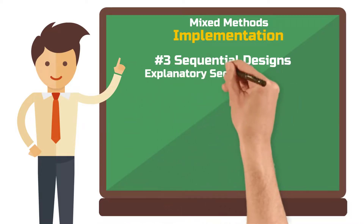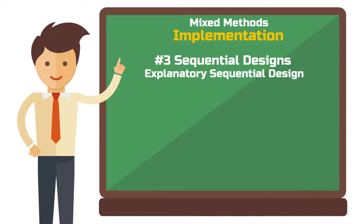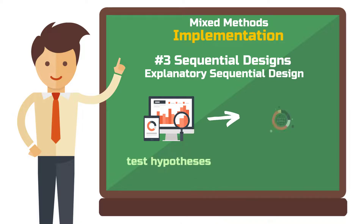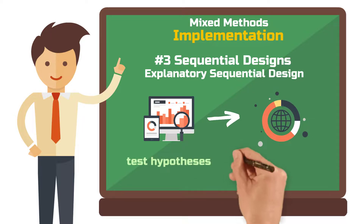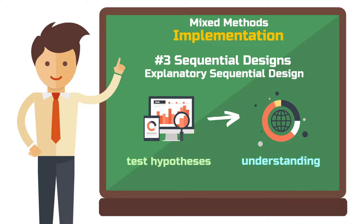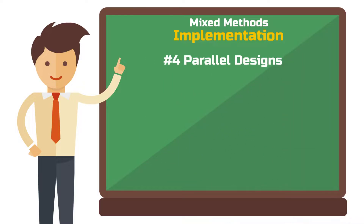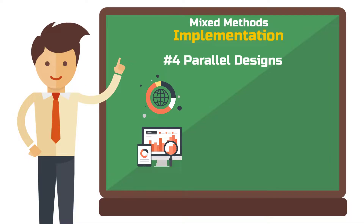The second sequential option is the explanatory sequential design. First, a quantitative study is used to test hypotheses; second, a qualitative study follows to understand why these results occur. Fourth, parallel designs: the alternative to a sequential design is a parallel mixed methods design, where you conduct multiple methods at the same time. In this case, the second study does not build on the results of the first; instead, the results of both studies are compared and contrasted once they are completed.